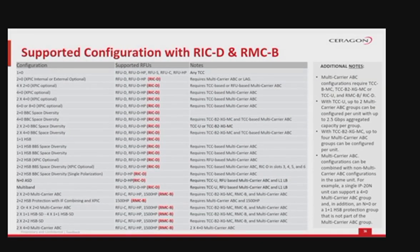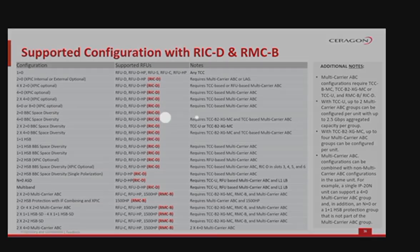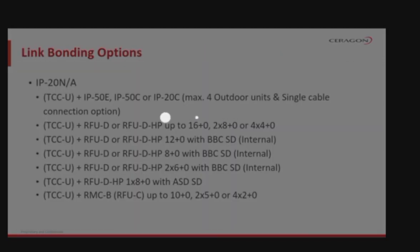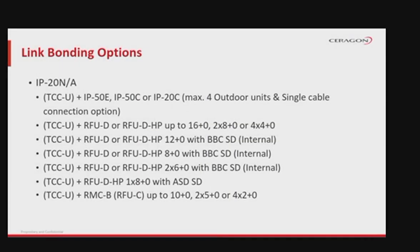IP20N and IP20A support a wide range of configuration options based on the type of TCC card and radio interface cards, either RIC-D or RMCB. Only the most common configurations are shown, with the required radio card highlighted. A new type of configuration increases link capacity up to 30 gigabits per second and allows integration with up to four all-outdoor units in addition to RFUs. This option is available only with TCCU as the main unit performing traffic distribution, and is called layer one link bonding.